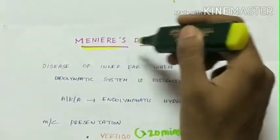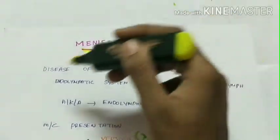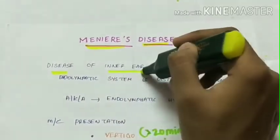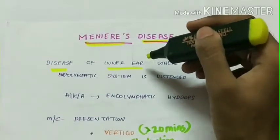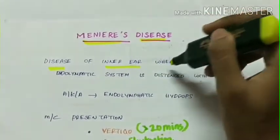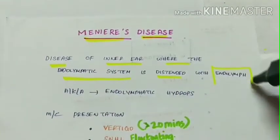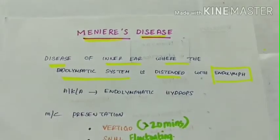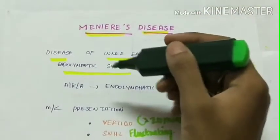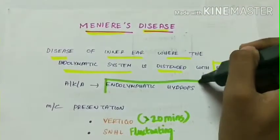Let's see about Meniere's disease. Meniere's disease is a disease of the inner ear, especially the membranous labyrinth, where the endolymphatic system is distended with excess endolymph. This is why Meniere's disease is also called endolymphatic hydrops.